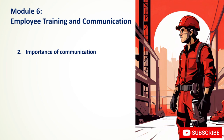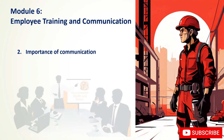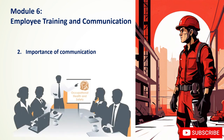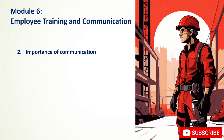Effective communication is the backbone of a successful OHS program. It ensures that information is shared clearly, accurately, and in a timely manner, leading to a safer work environment. The key roles of communication in OHS include information sharing — disseminating safety policies, procedures, and regulations, communicating hazard information and risk assessments, and sharing information about incident investigations and corrective actions.